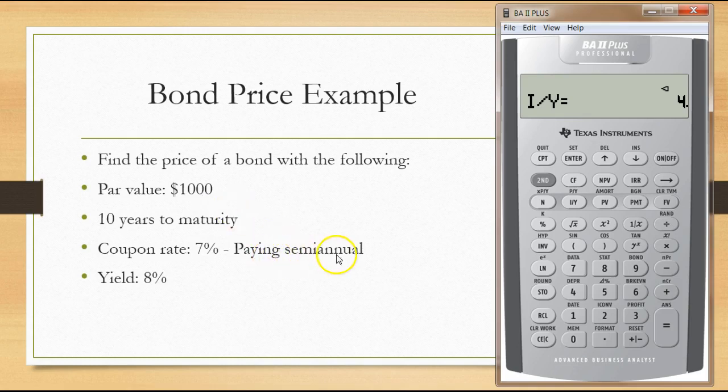Since the bond pays semi-annually, we take that $70 divided by 2, so our coupon per semi-annual period is going to be 35. The future value of our bond is our par value of $1,000.